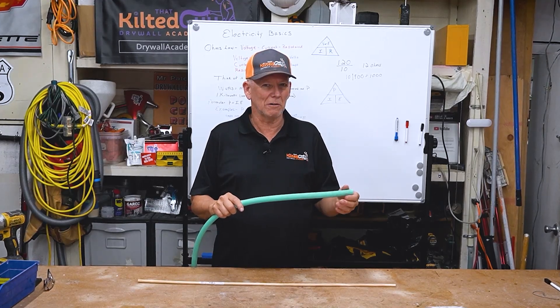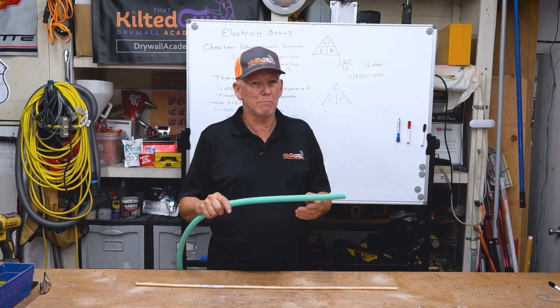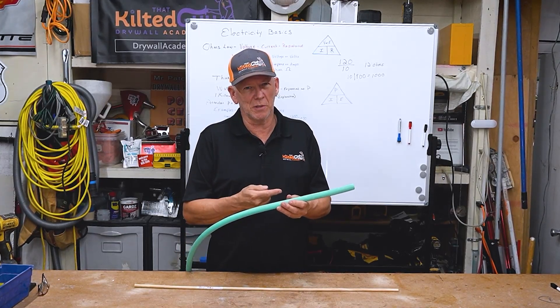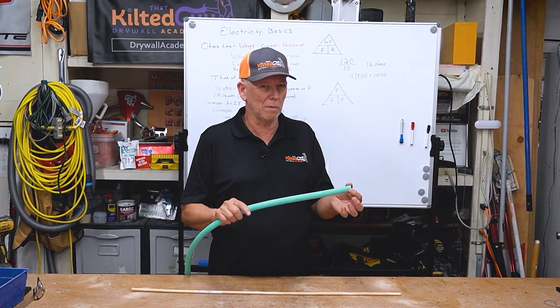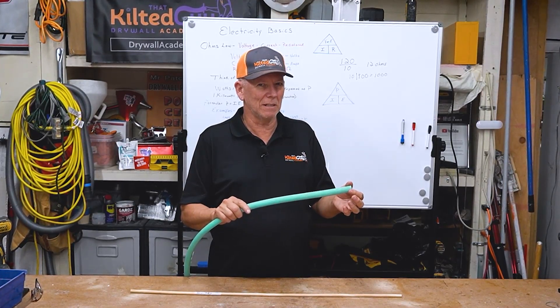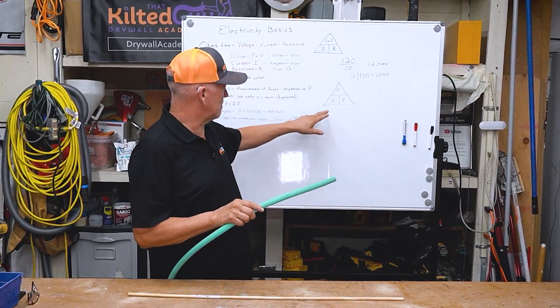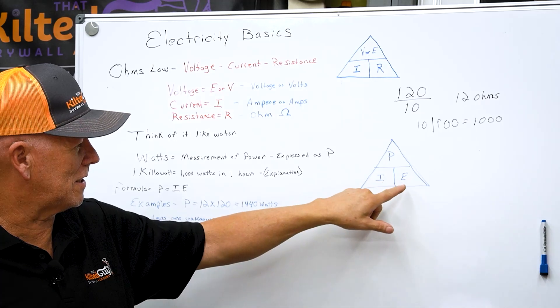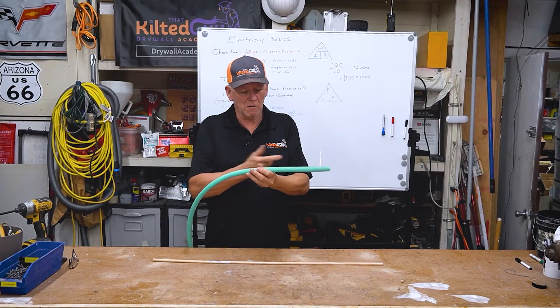The amount of water going through there, that's the current. So current is basically the amount of electricity flowing through a wire, or in this case the amount of water. It really works really similar. Now the voltage is the pressure that pushes it through there.